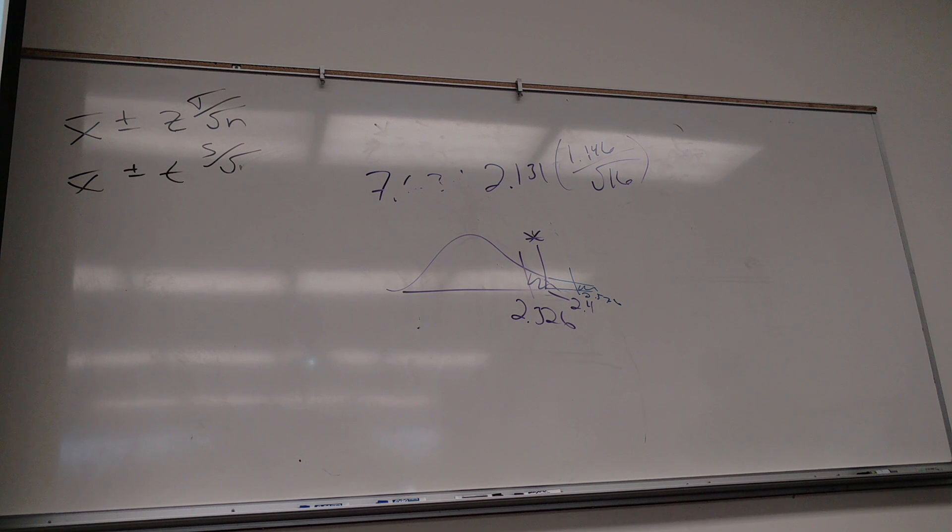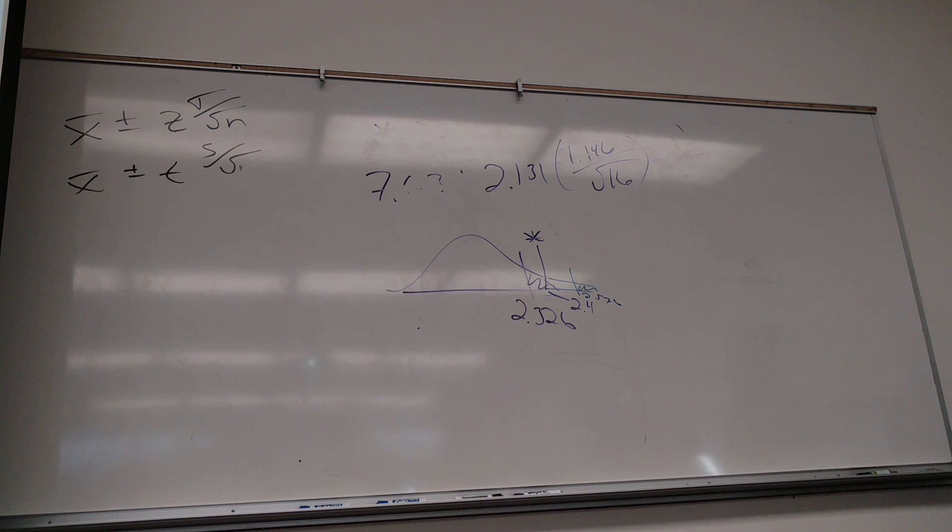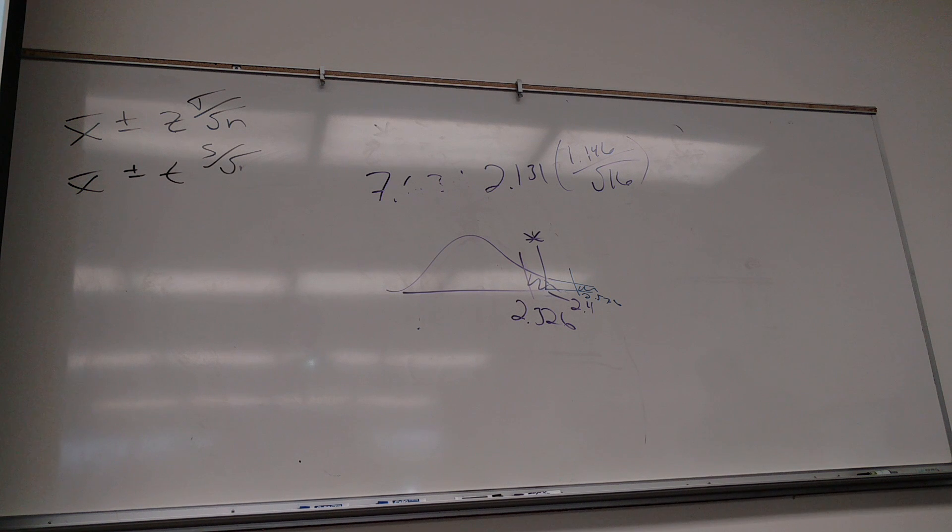So the area in my tail would then be 1 minus that. 0.1492. Columbus. And that's not my P value. It's a two tail test, so you double it. That's all. So the P value would be 0.2984.